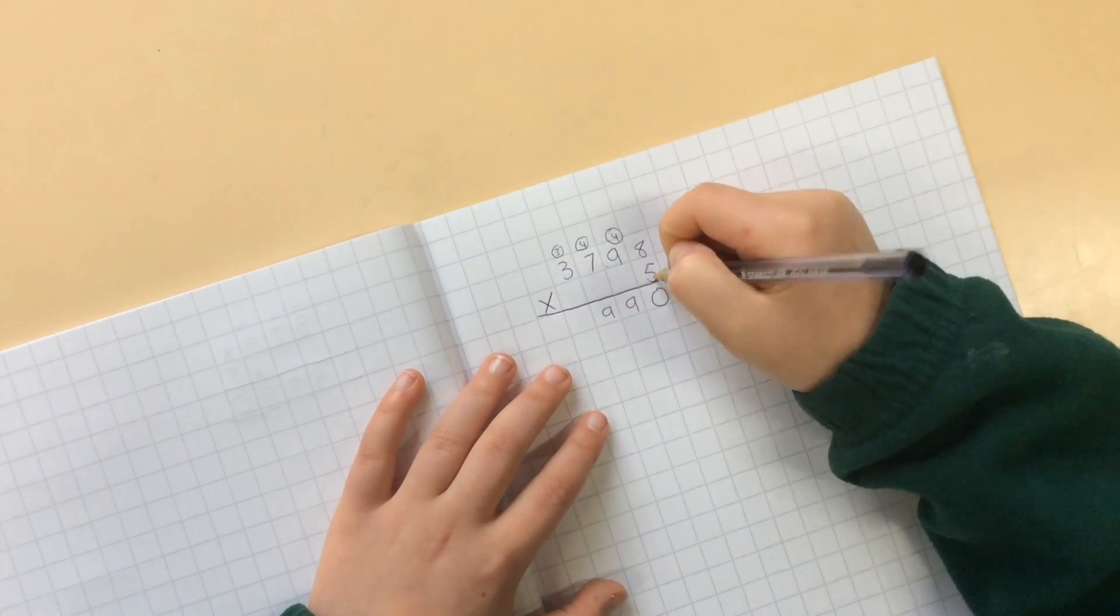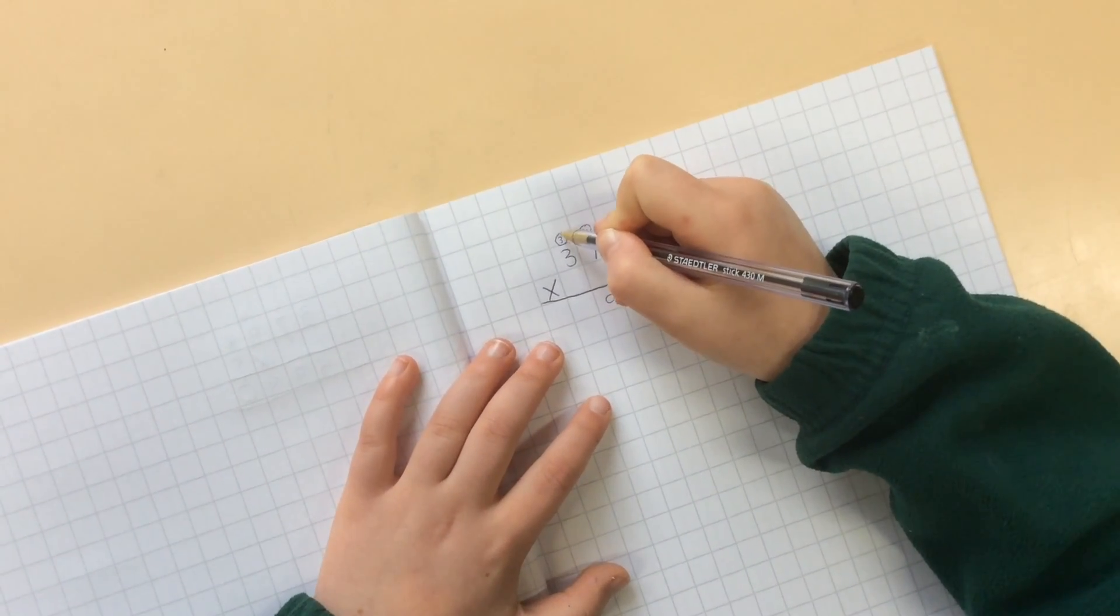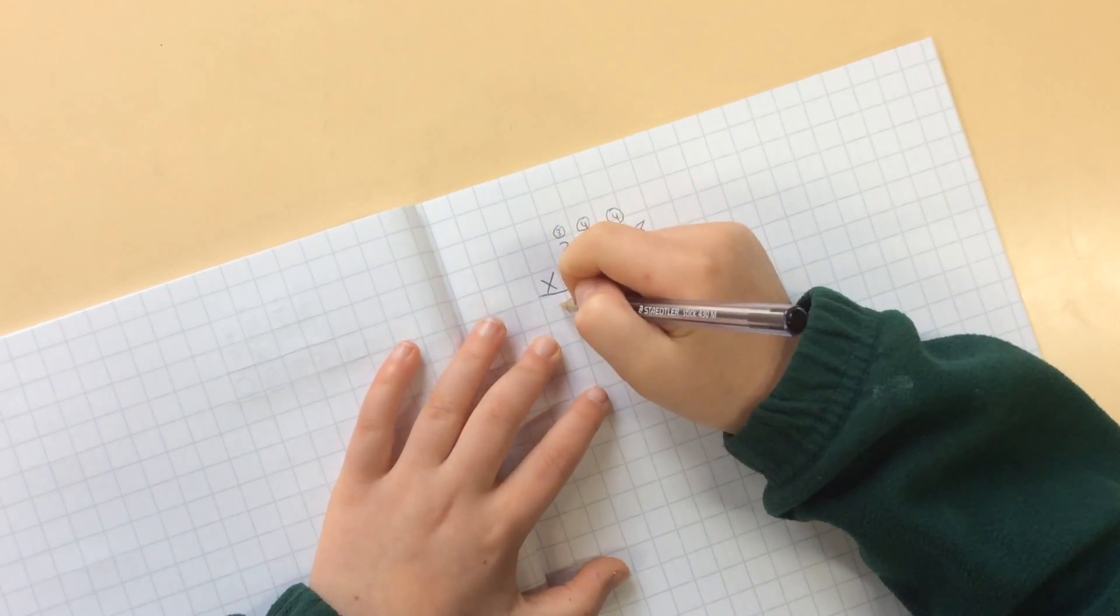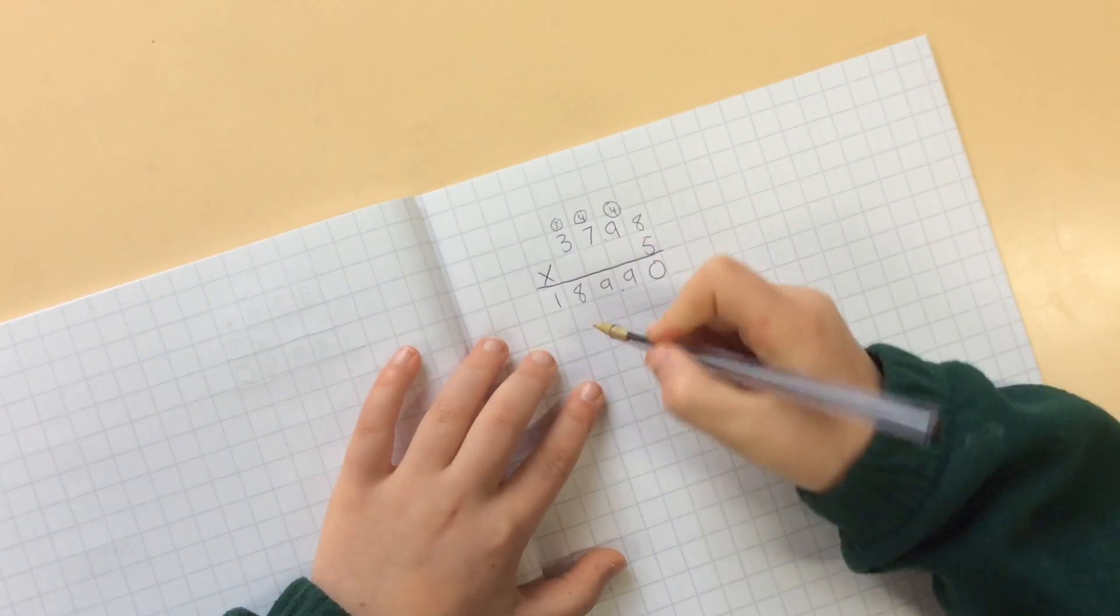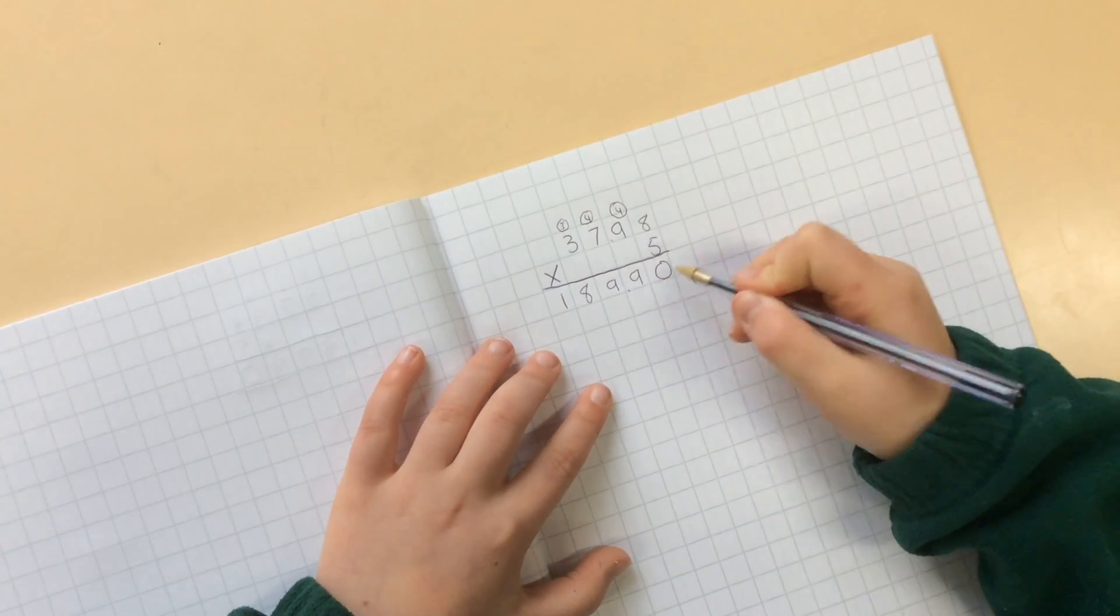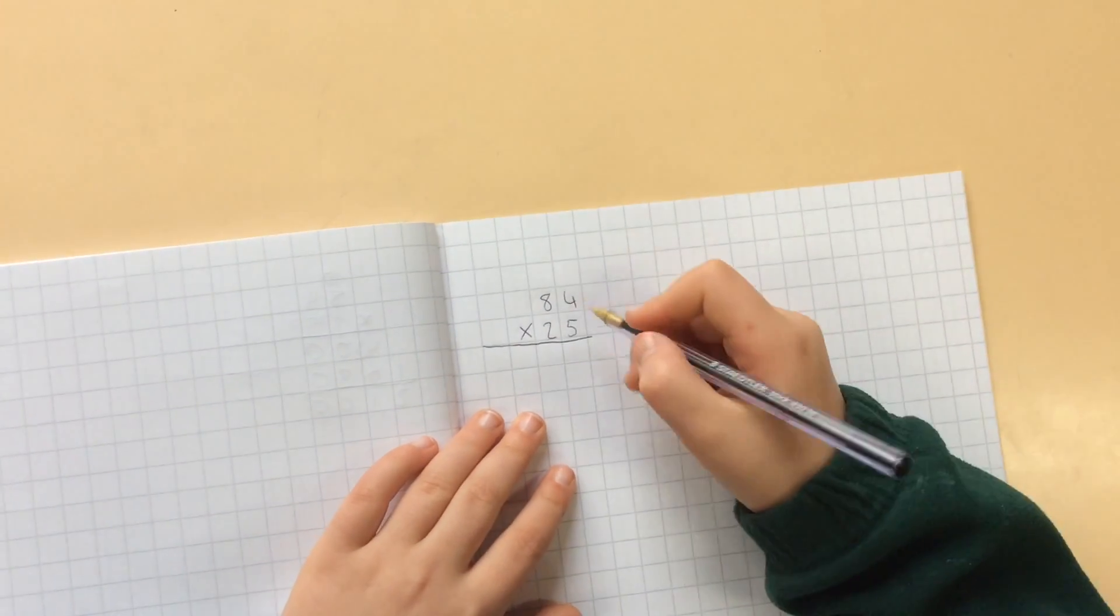Now I'm going to do 5 times 3 to finish off, and that will give us 15. Added to my 3 will give us 18. So in total, that will be 189.9. Now we're going to move on to long multiplication method.